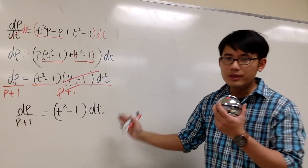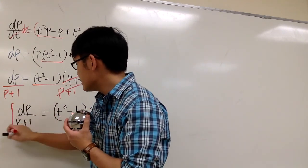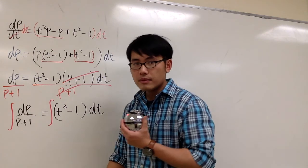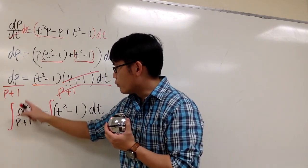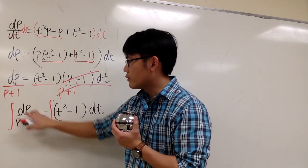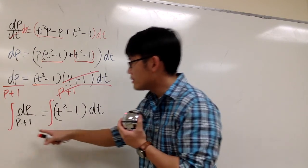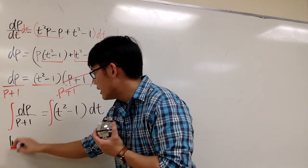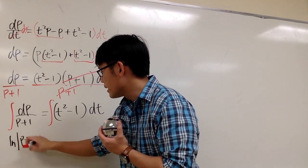We are ready to integrate both sides. Let's do it. So, integrate this side, integrate this side. This is the integral of 1 over p plus 1. The dp is just like on the side, it doesn't really matter. So, the answer for that is going to be ln absolute value of p plus 1.